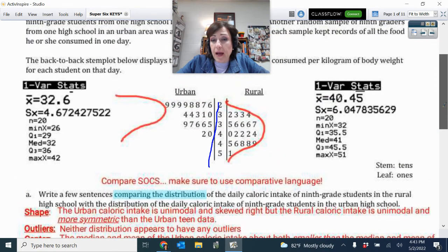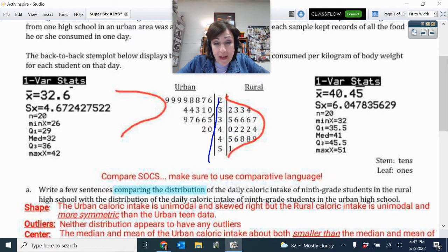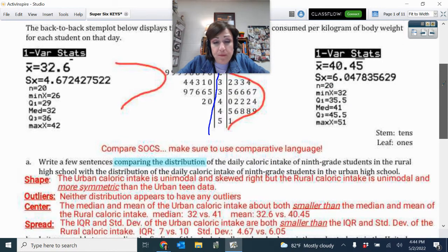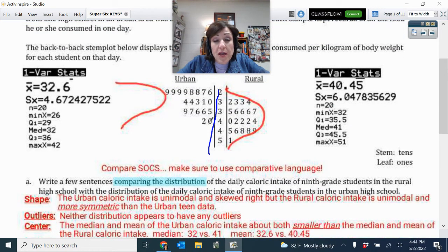Now you can, I actually went ahead and put all of these into my calculator and I did one variable statistics for urban and there's the printout I got. I did one variable statistics for rural and there's the printout that I got. So I had that information. Now remember that if you have skew, then you should be choosing to use median and IQR really as your indicator of center and spread.